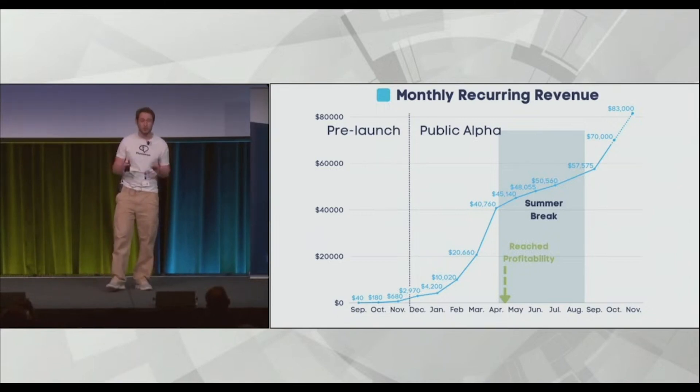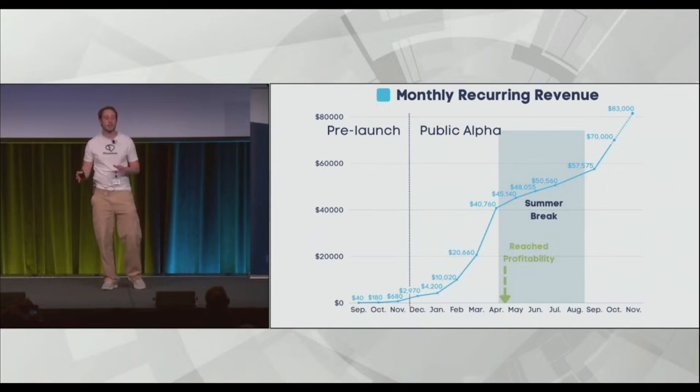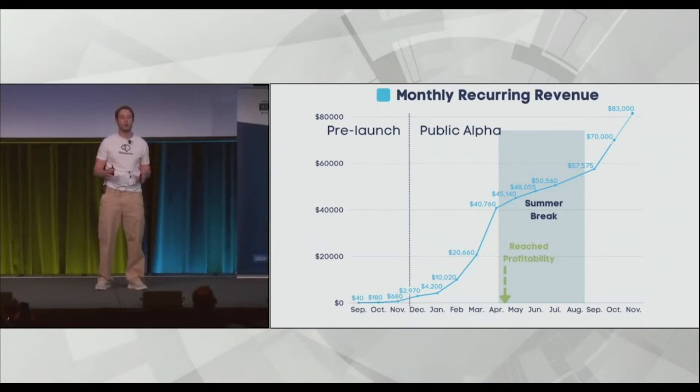We reached profitability already, and we did it six months after launching. 26 days from today, we'll hit $1 million in annual recurring revenue, and we did all of this with a three-person team.